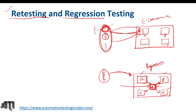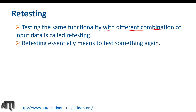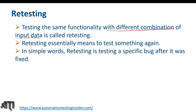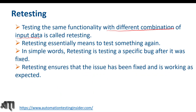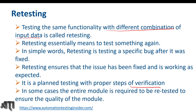Let's recap retesting and cover more details. Testing the same functionality with different combinations of input data is called retesting. Retesting essentially means to test something again. More specifically, retesting is testing a specific bug after it has been fixed. Retesting ensures that the issue has been fixed and is working as expected — that is the main purpose. It is planned testing with proper steps of verification.